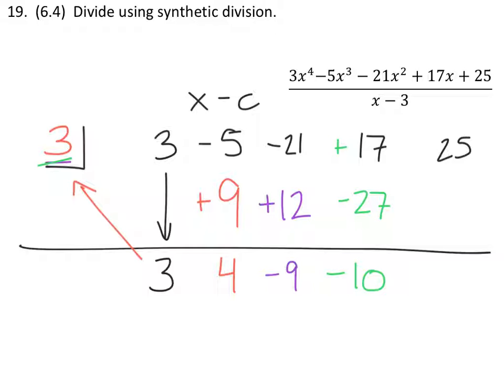Finally, we have negative 10 times 3, which is a negative 30, which gives us a negative 5.